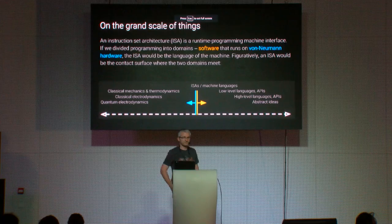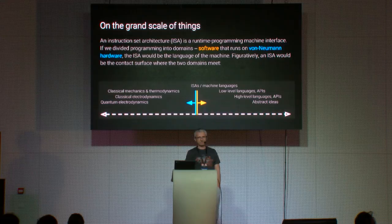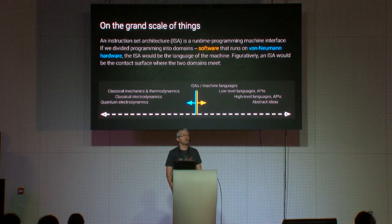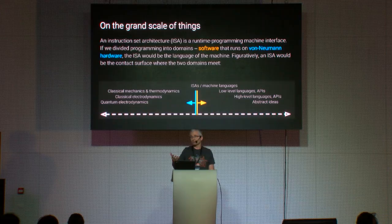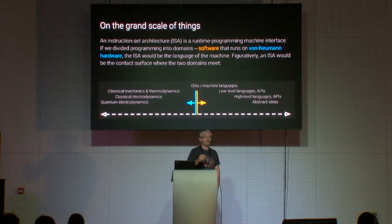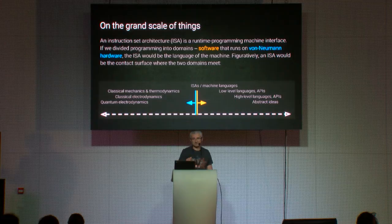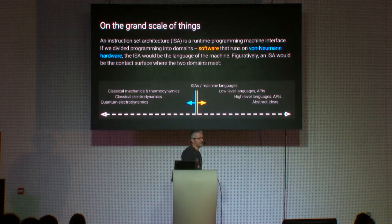First things first: what's an instruction set architecture? An instruction set architecture, or ISA for short, is a runtime programming interface of a von Neumann machine. Most of the computers around us today are von Neumann machines. If we divide programming into two major domains — the domain of software and the domain of hardware — then the ISA would be the contact plane between the two domains.